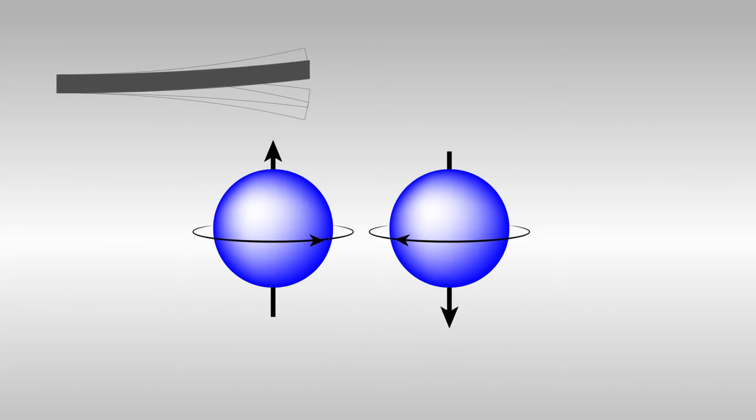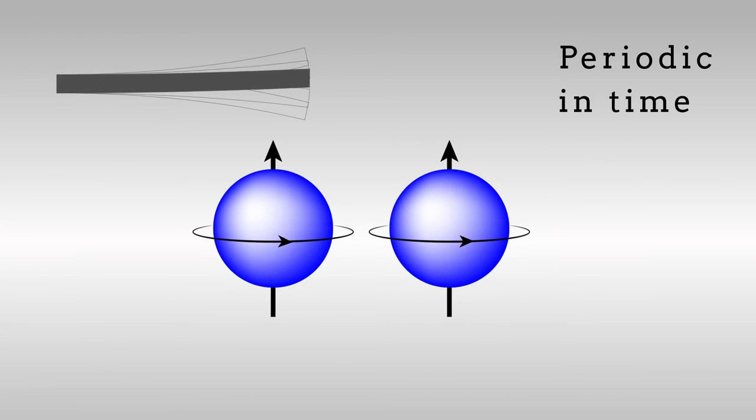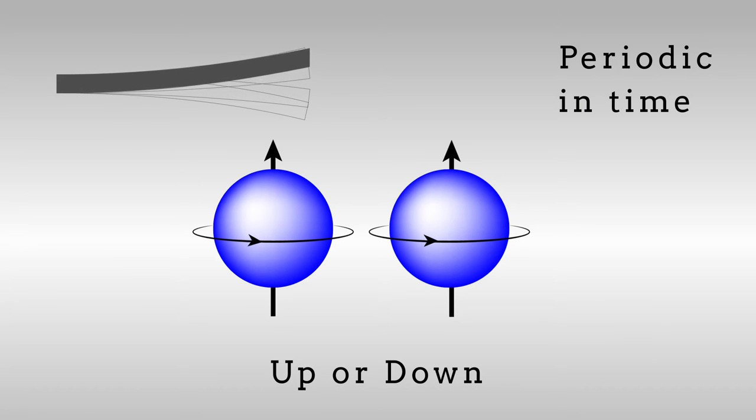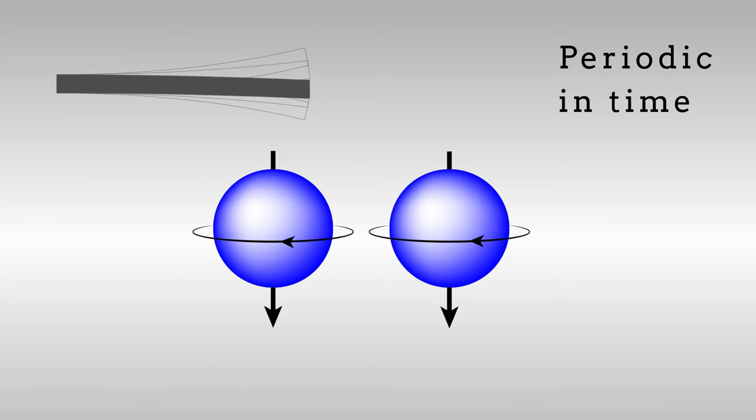Oscillating the cantilever applies a strain that is periodic in time, coupling the states in which both spins align up or down, and allowing the system's state to be juggled rapidly between both up and both down by mechanically oscillating the cantilever in resonance with the spin.